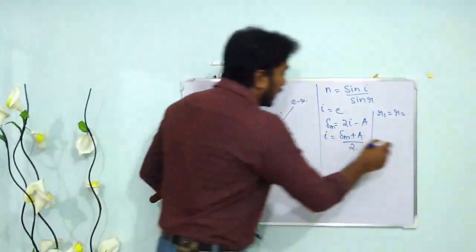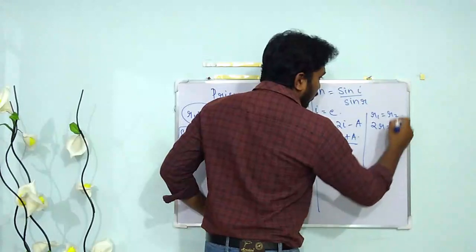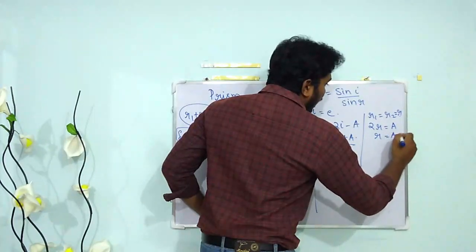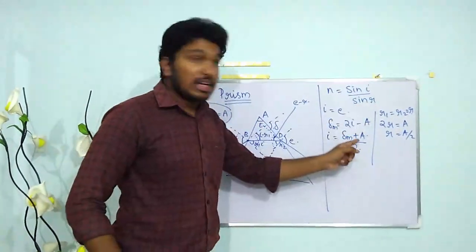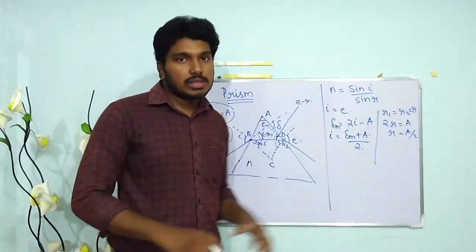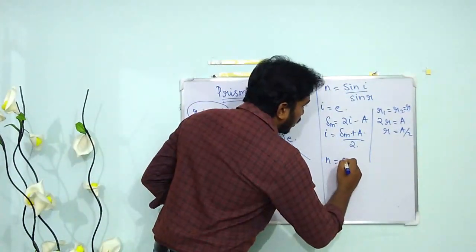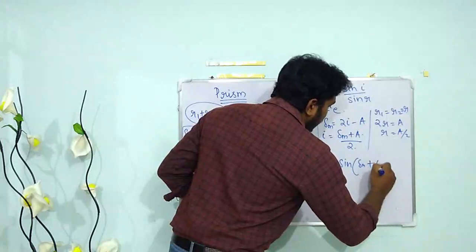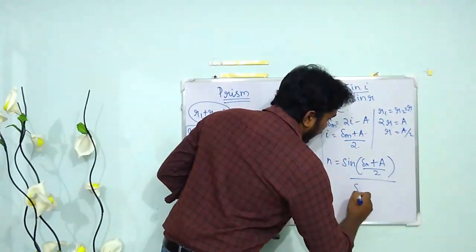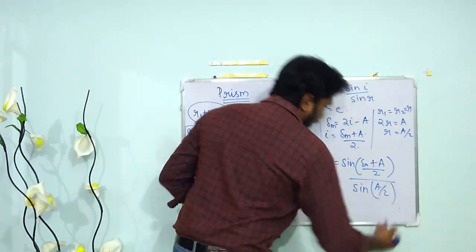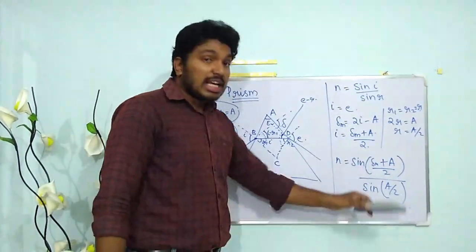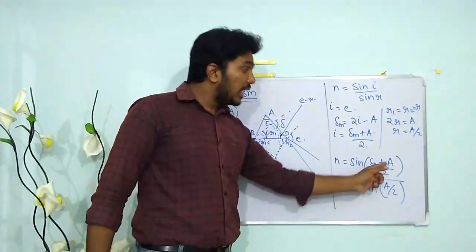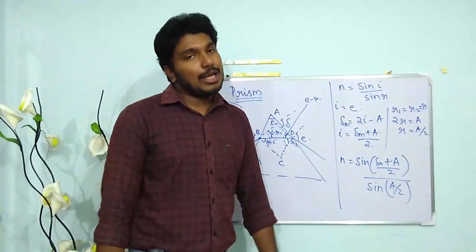Substituting both these relations into Snell's law, we get: n = sin((δm + A)/2) / sin(A/2), where δm is the minimum deviation — sometimes written as capital D in textbooks.